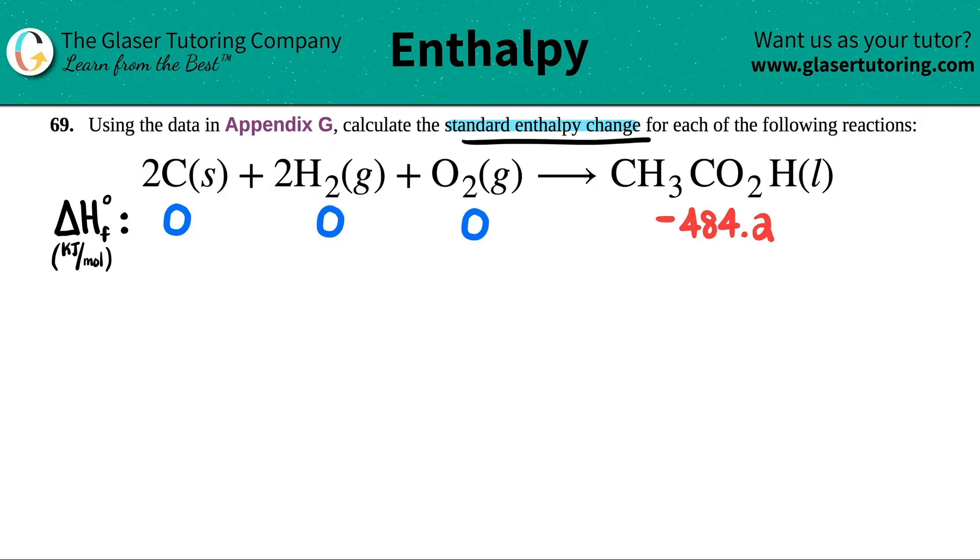They're asking for the standard enthalpy change. Enthalpy is delta H. If you look on these appendices, you'll see probably a three-tiered chart: delta H's, delta G's, and S values. We only care about the H's because they just want enthalpy.